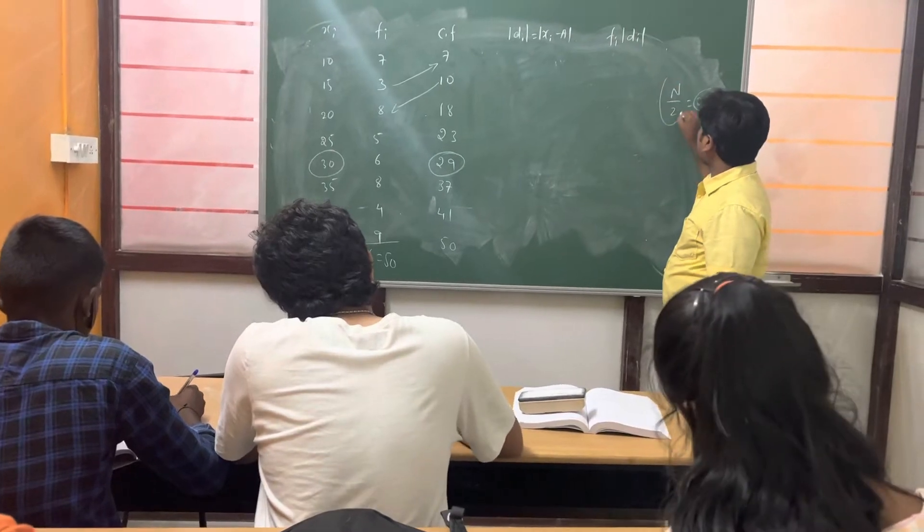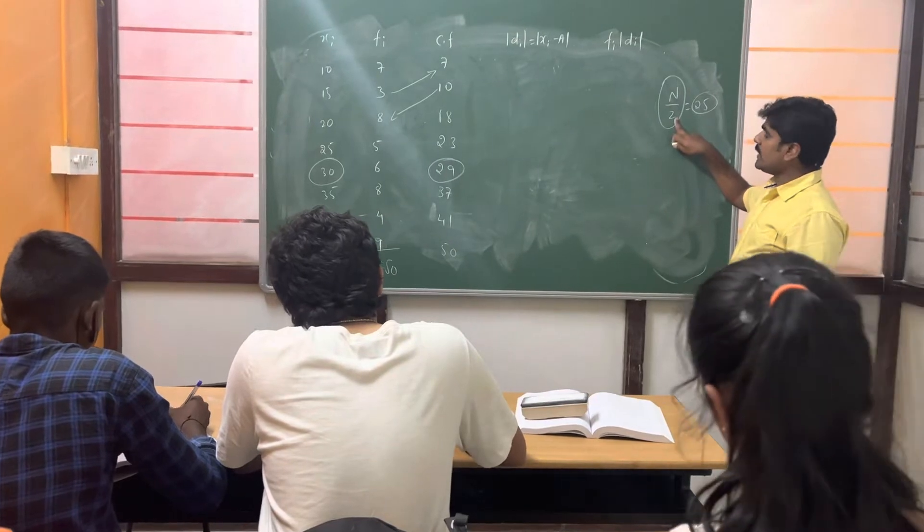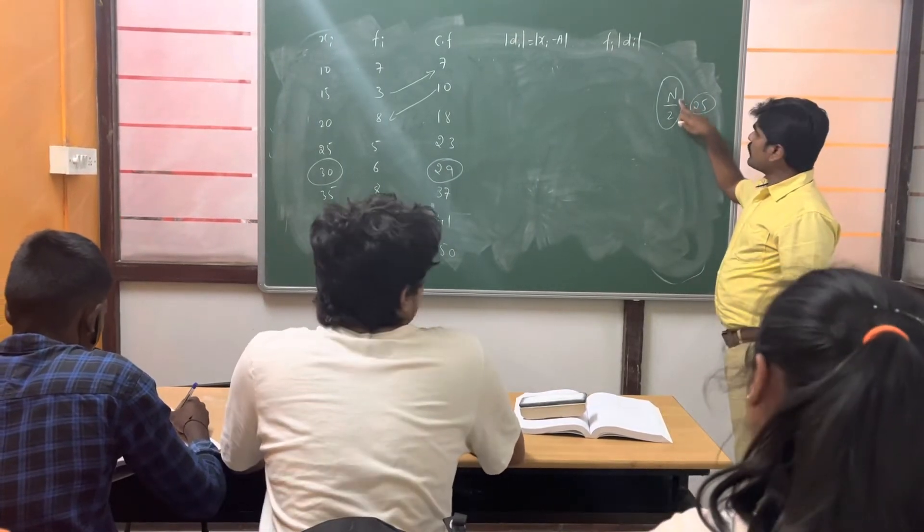Further, we need to find out N by 2 for finding the median. What is N by 2? N by 2 we are getting, it is 25. 50 by 2 it is 25.